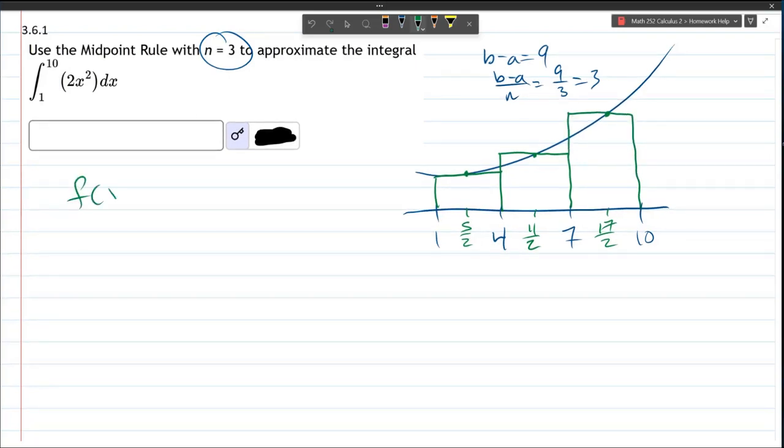So, our function is 2x squared. And I want to take 5 halves and evaluate it. Because I need to get the y value.